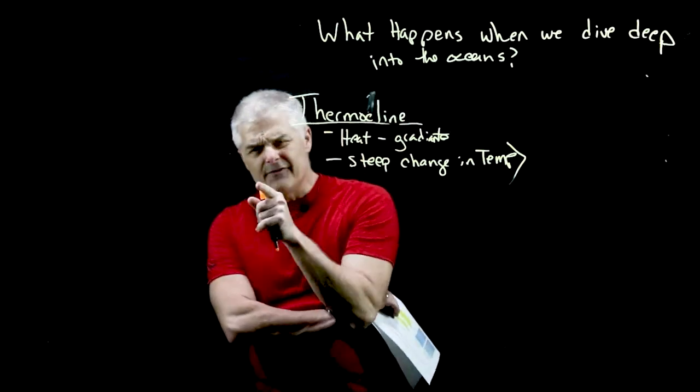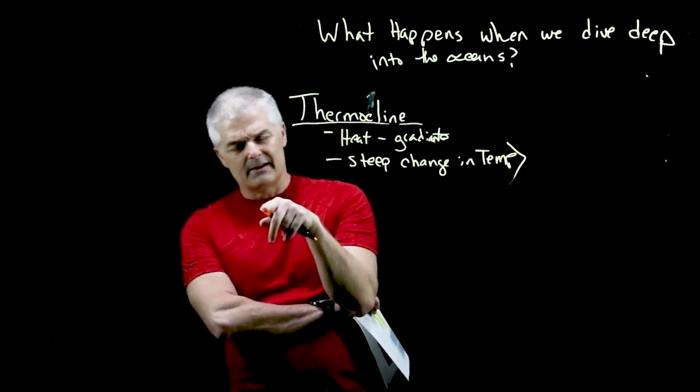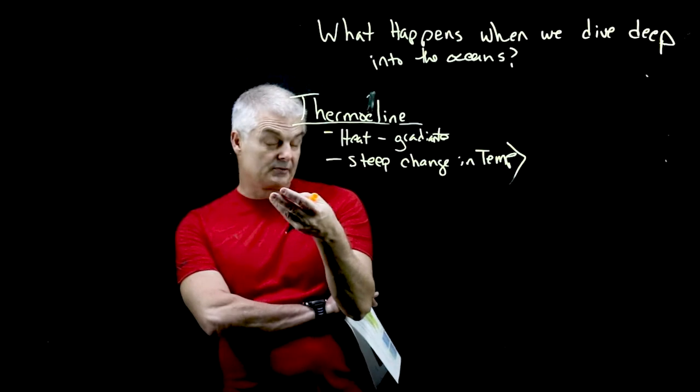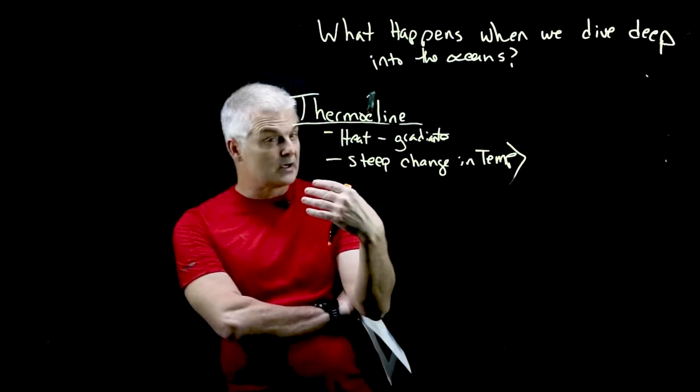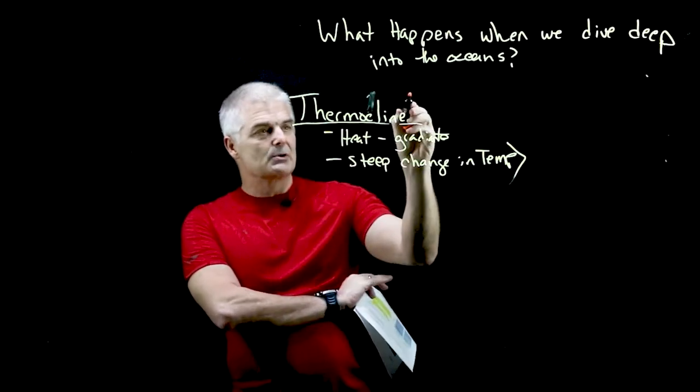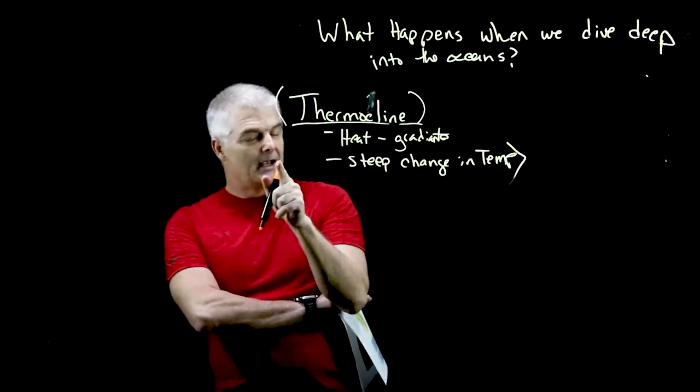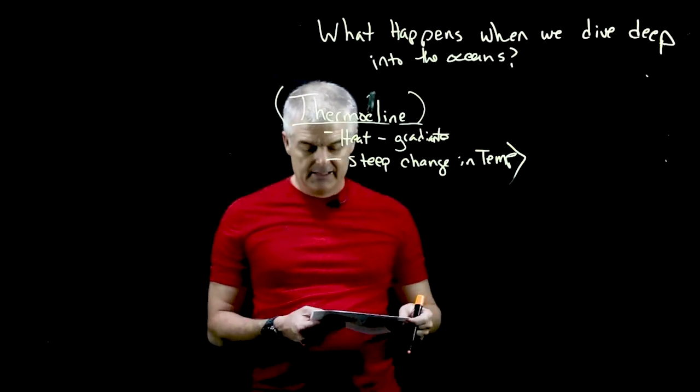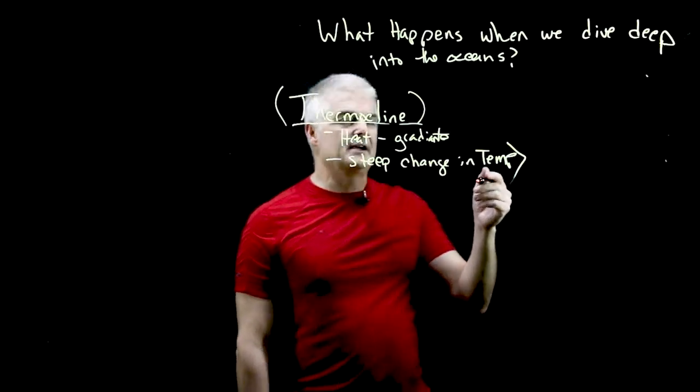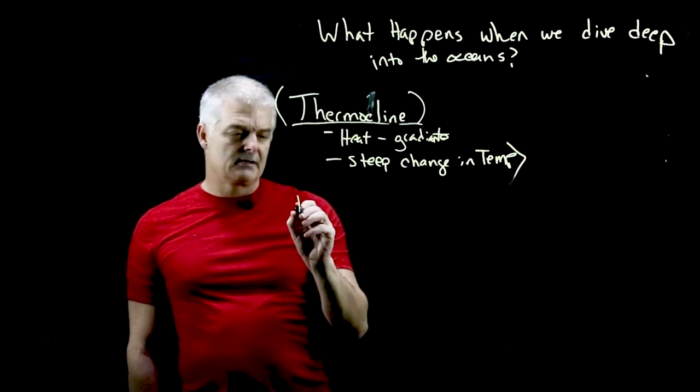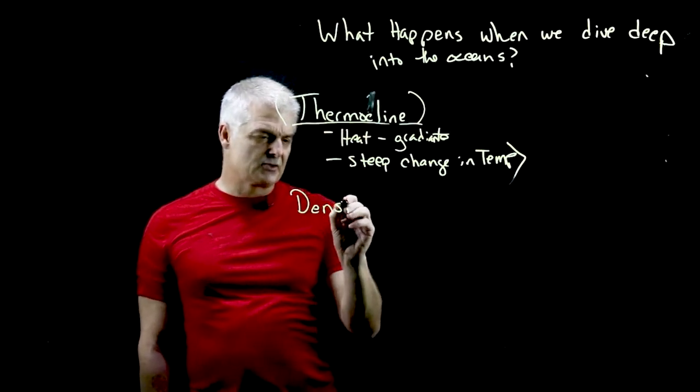And it affects so many things. We'll talk more about it later. It has to do with what organisms will survive, where nutrients come from. So a lot has to do with this thing called the thermocline. And related to the thermocline is something else. I want to define a term here and it's something you've seen before in science class. It's a term of density.